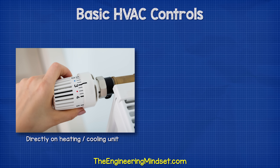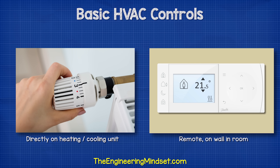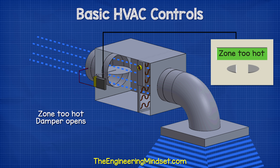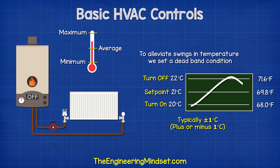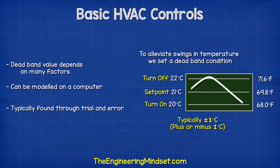The thermostat could be located on the output device, like a thermostatic radiator valve, or remotely, like a room thermostat which controls the position of a damper in a fan coil unit. To alleviate swings in temperature, we set a deadband condition, typically plus or minus 1 degree Celsius from the required temperature. For example, if we want a room temperature of 21 degrees Celsius with a deadband of plus or minus 1 degree, the heating will turn on when the room falls below 20 degrees Celsius and switch off when it is above 22 degrees Celsius, giving an average of 21 degrees. The deadband value is generally found through trial and error, with small incremental changes to find the optimal point where the room is comfortable and the system operates efficiently.